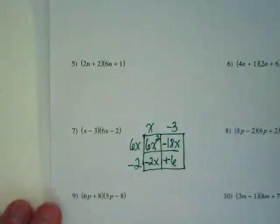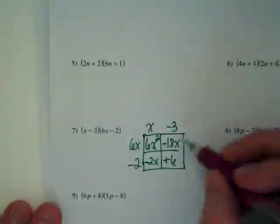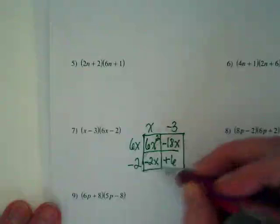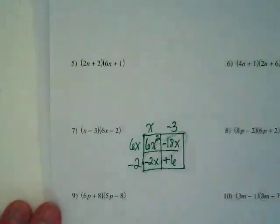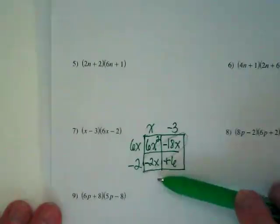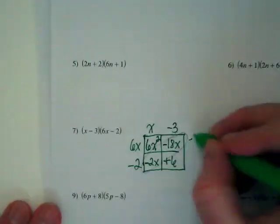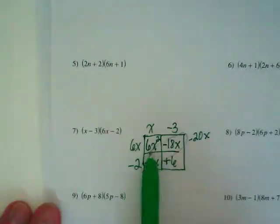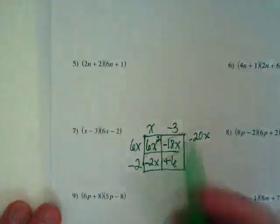When we do these with binomials times binomials, we often end up with like terms and they are usually diagonal and I see like terms here. So I get negative 18X and negative 2X is going to become negative 20X. So I'm going to rewrite it using this term, this term, and this term as my answer.